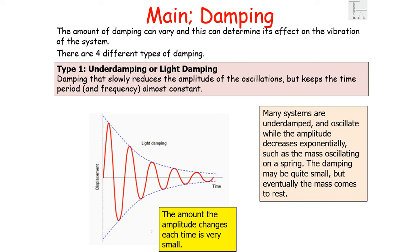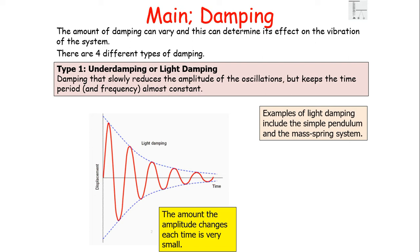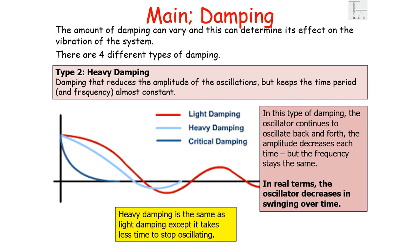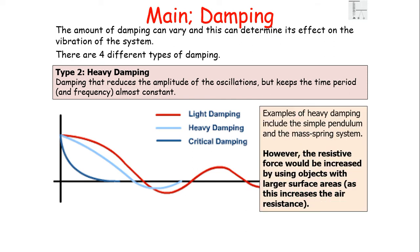Examples of lightly damped systems include the simple pendulum and the mass-spring system — the dampening may be small but eventually these will come to rest. The second type is heavy dampening: dampening that reduces the amplitude of oscillations while keeping the time period and frequency almost constant. It is the same as light dampening except the dampening effect is faster and it takes less time to stop oscillating — the reduction in amplitude occurs in a shorter time. To increase heavy dampening, resistive forces can be increased by using objects with larger surface areas, which increases air resistance.